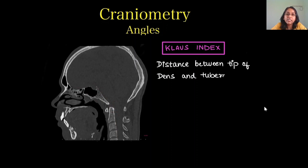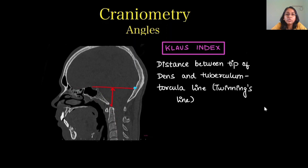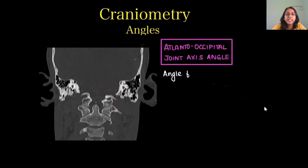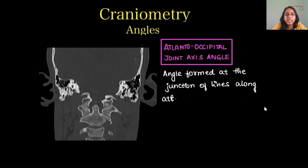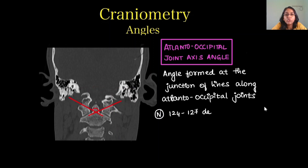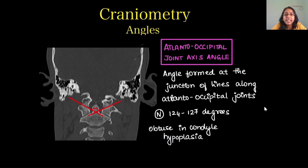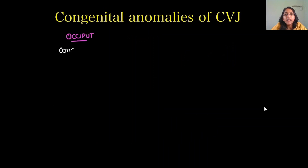Next is the Klaus index, which measures the distance between the tip of the dens and the tuberculum–torcula line, also called the twinning line, drawn from the tuberculum to the torcula. Normally the dens is 40 to 41 mm below this line. The atlantooccipital joint axis angle is measured on the coronal section at the junction of two lines drawn along the atlantooccipital joints, normally 124 to 127 degrees, becoming more obtuse in condyle hypoplasia.